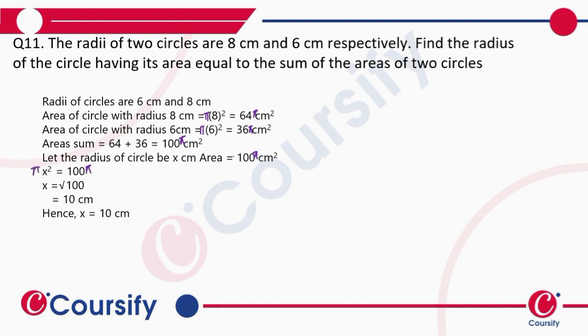So this π will get cancelled and x² equals 100. Therefore, x will become √100, which is 10 centimeters. So the radius of the third circle, which has area equal to the sum of the first two circles, is 10 centimeters.